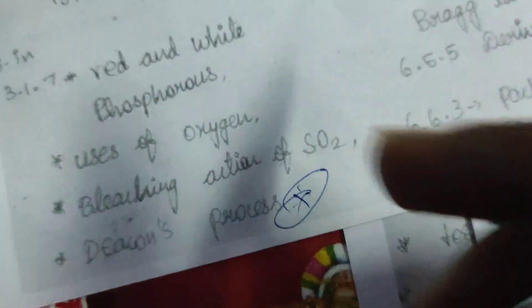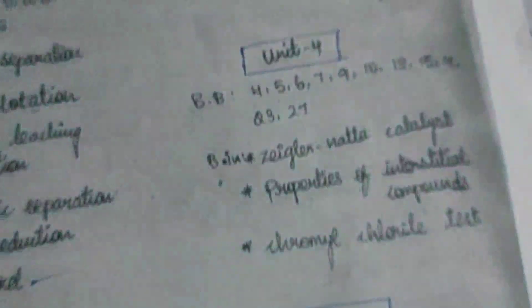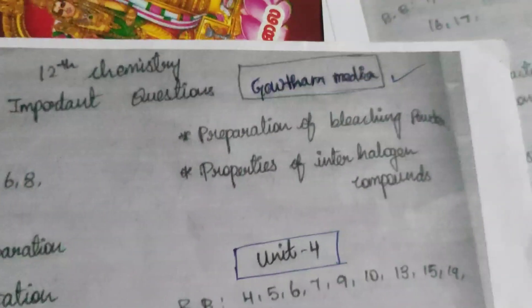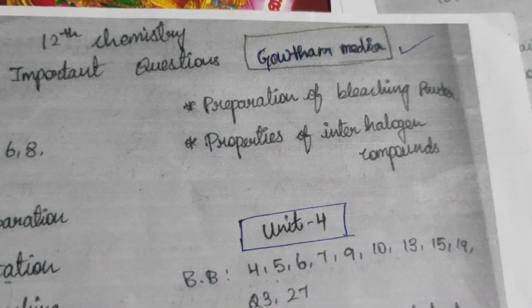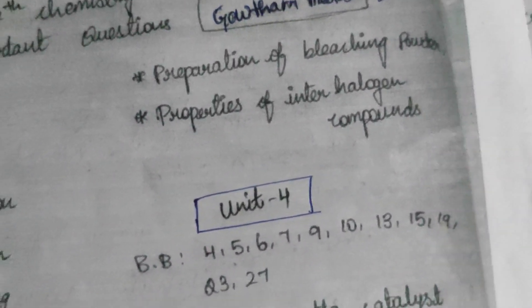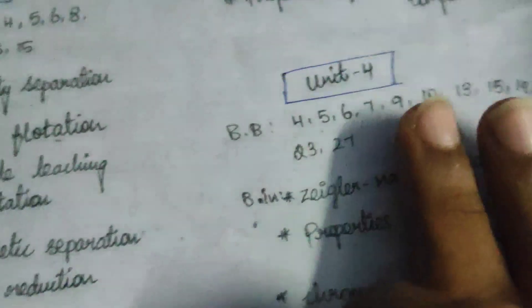So let's see. Preparation of Bleaching Powder, Properties of Inter-Halogen Compounds. This is very important.